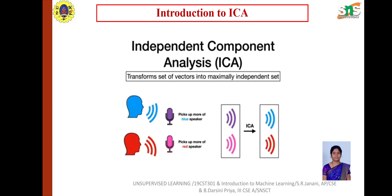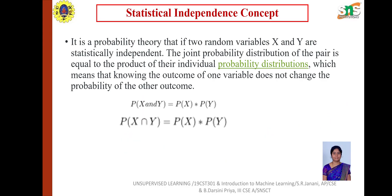In this problem, there are two microphones which are separated using independent component analysis. The main concept is statistical independence. It is a probability theory that if two random variables X and Y are statistically independent, the joint probability of the pair equals the product of their individual probability distributions, which means knowing the outcome of one variable does not change the probability of another.